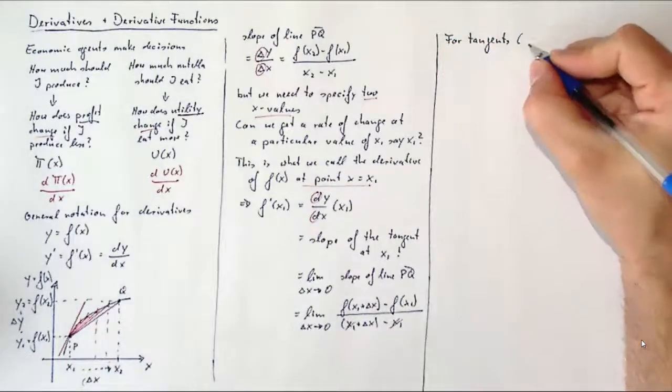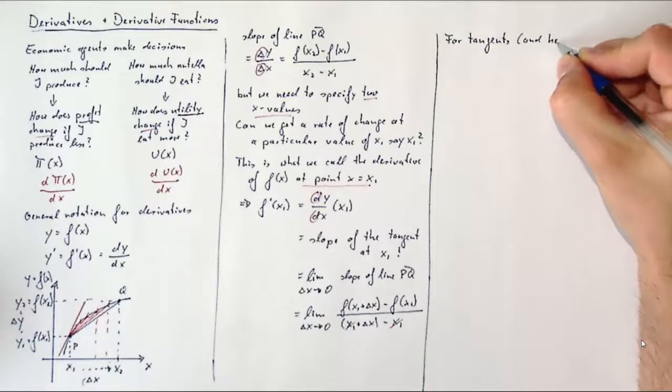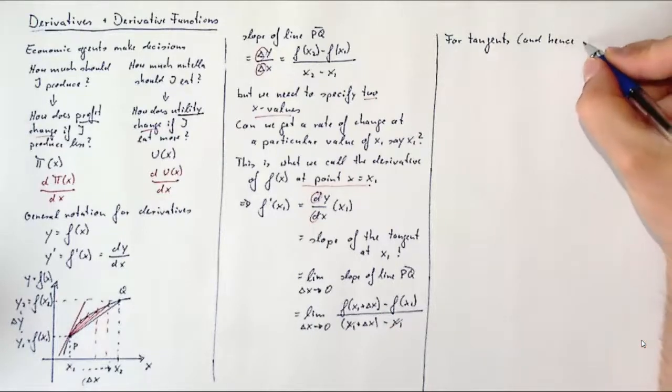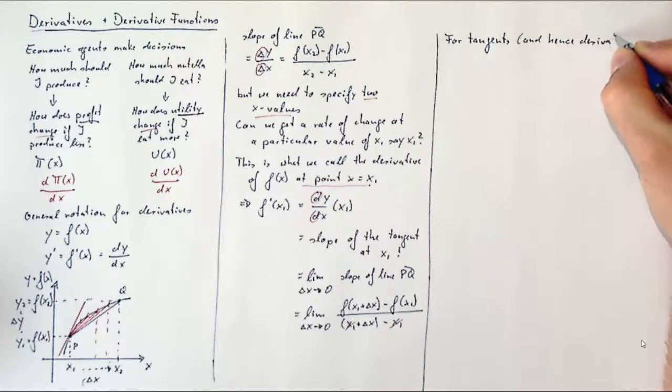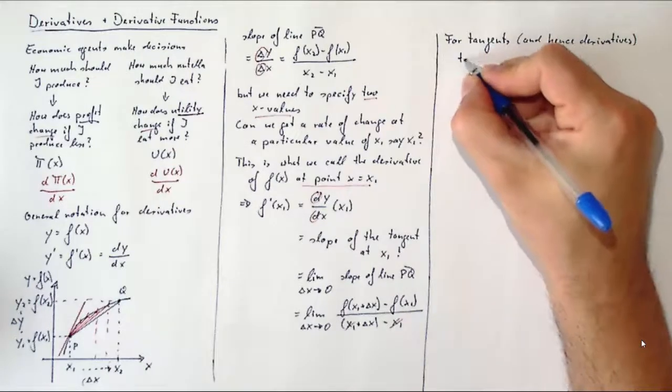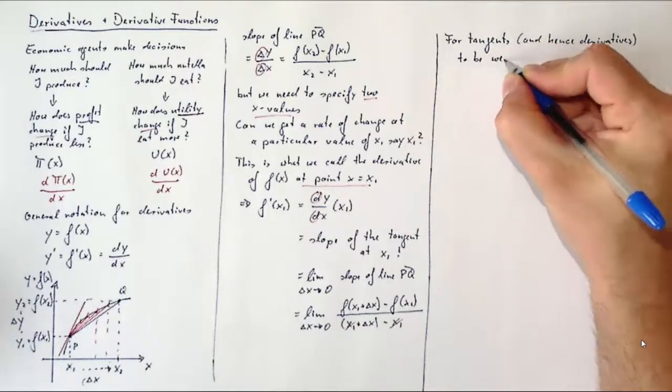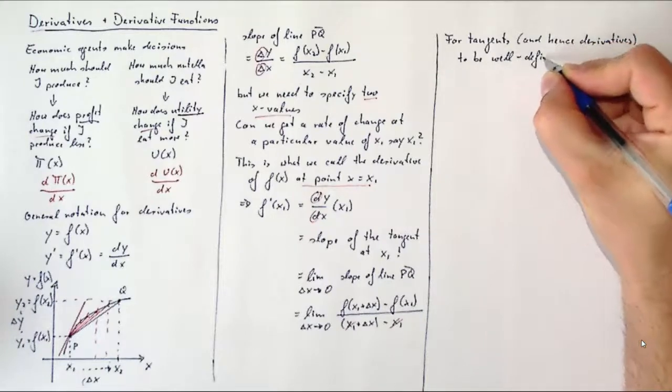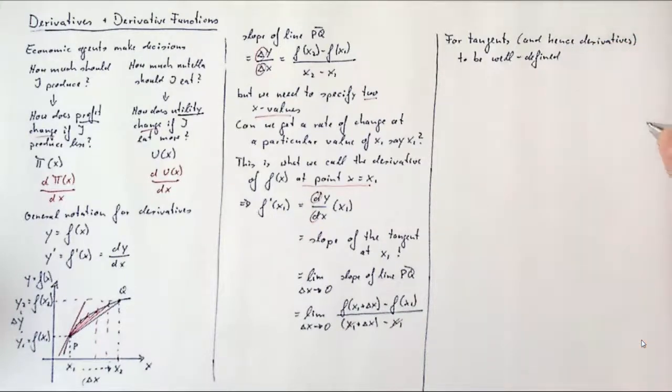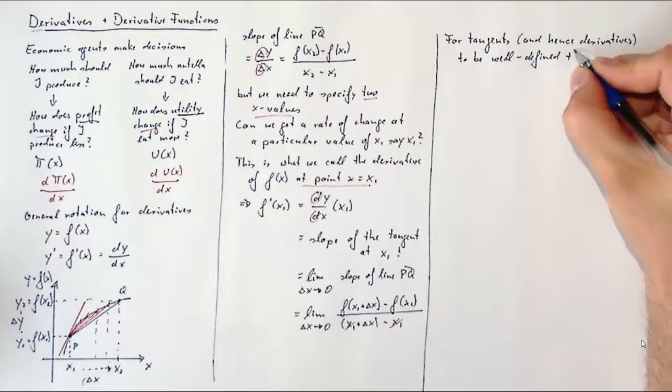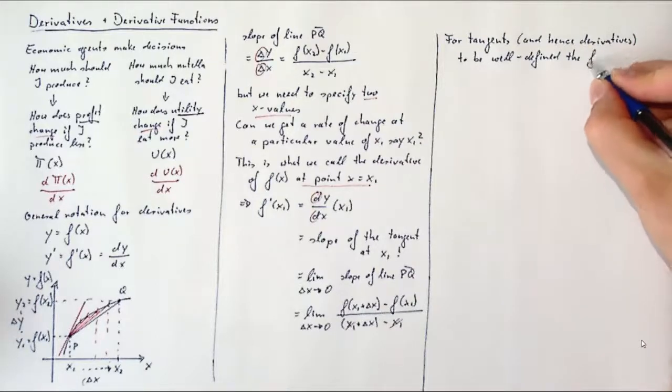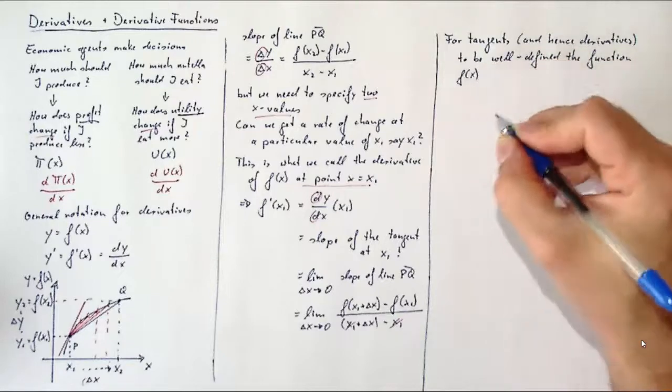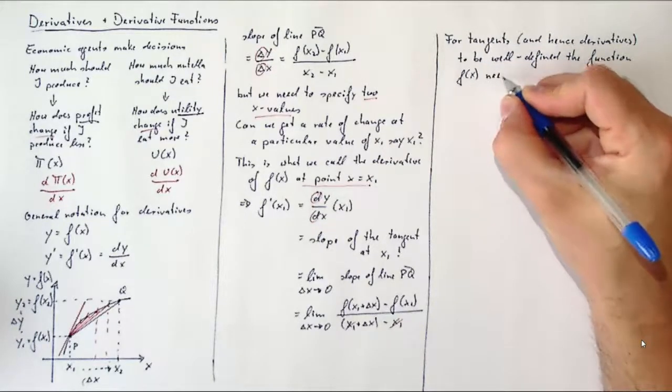So graphically, we represent a derivative by a tangent of a function at a particular point. Now for a tangent to be well defined, and therefore the derivative, we actually have some conditions on the function f(x). So not every function has a derivative at every point. Most reasonable functions will have derivatives at some points, but not necessarily at all.